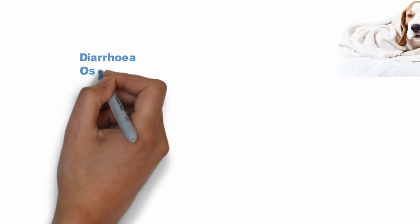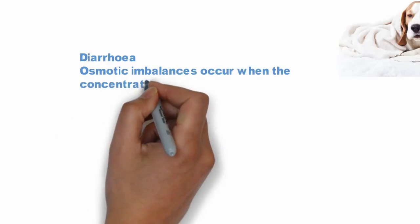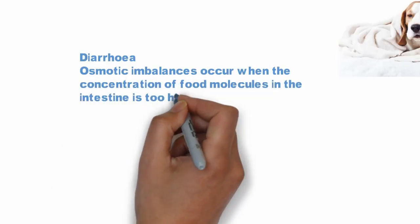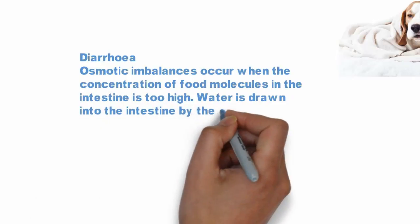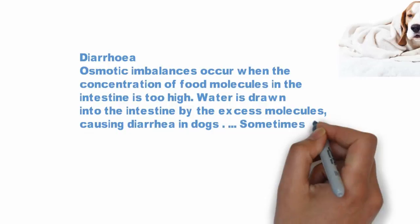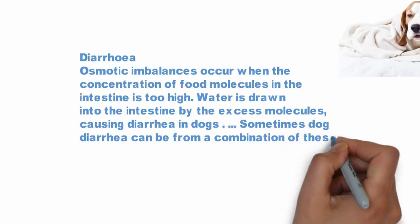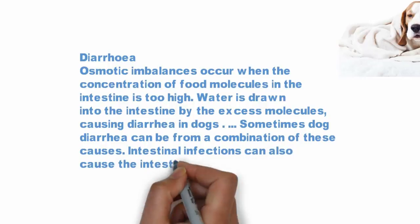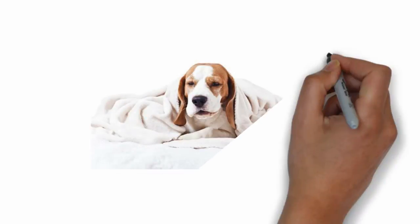6. Diarrhea. Osmotic imbalances occur when the concentration of food molecules in the intestine is too high; water is drawn into the intestine by the excess molecules, causing diarrhea. In dogs, diarrhea can be from a combination of causes. Intestinal infections can also cause the intestine to oversecrete.